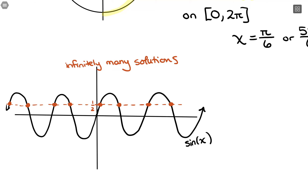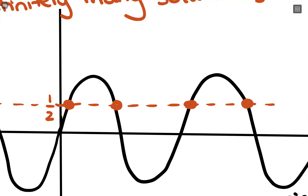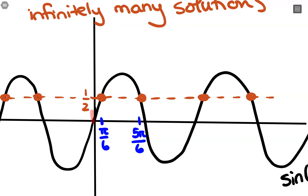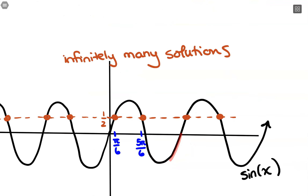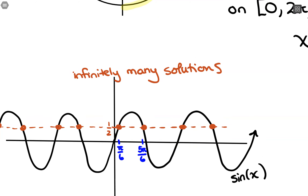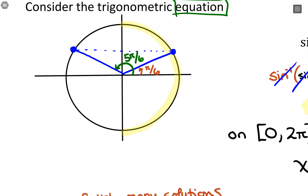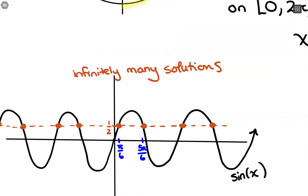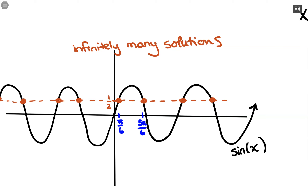We already found two of these coordinates: pi/6 and 5pi/6 are the two intersections occurring from 0 to 2pi — that single period. Beyond that, think in terms of coterminal angles on the unit circle: where we have pi/6, we could do a full circle and then pi/6, or two revolutions and then pi/6, or go in the negative direction. There are infinitely many possibilities, and this graph really helps visualize that.